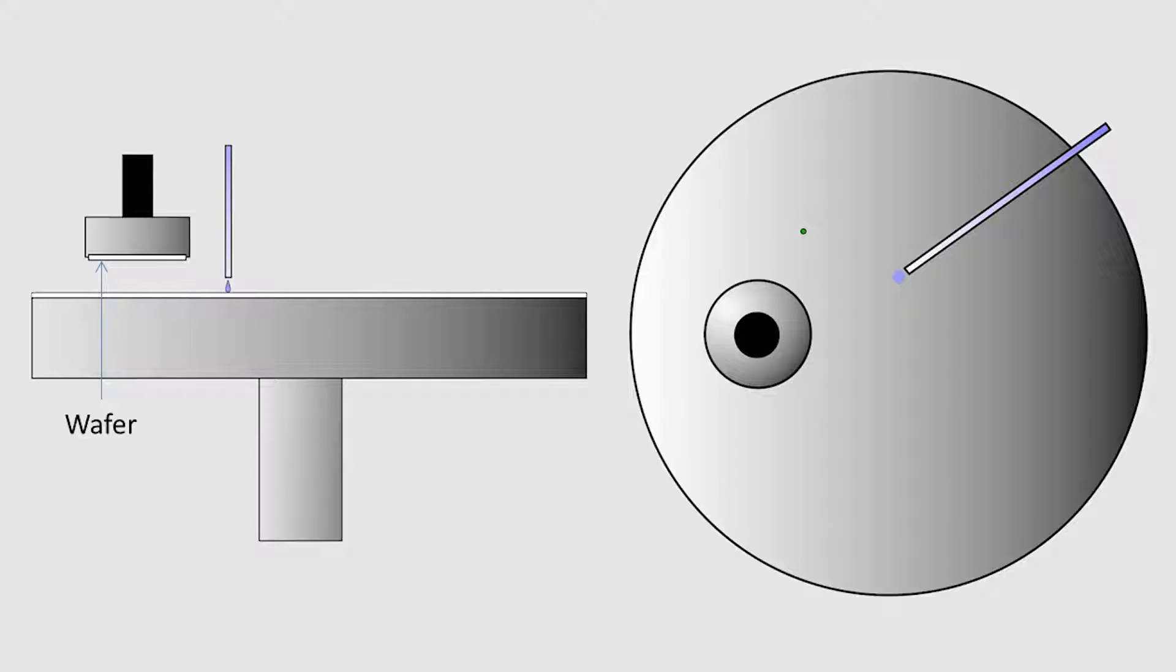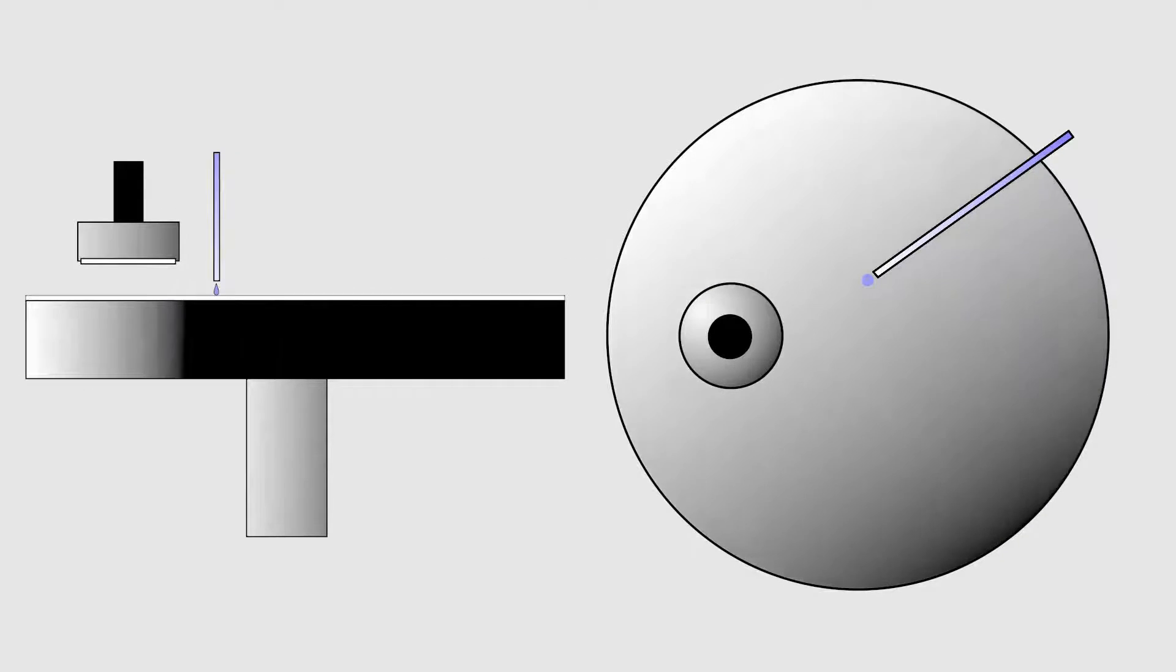First, the wafer is placed into a rotating carrier arm, which holds the wafer face down onto a rotating polishing pad. Next, a mixture of water, chemicals, and abrasive nanoparticles, known as a pristine slurry, is dispensed onto the polishing pad.